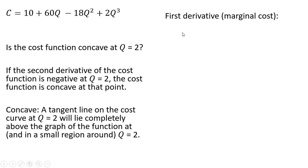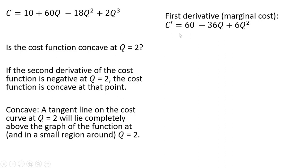So we need to get the second derivative. First, we get the first derivative, which happens to be marginal cost. Taking the derivative of this equation: the derivative of 10 drops out to 0; the derivative of 60q is 60; the derivative of minus 18q squared — bring the 2 down, so 2 times 18 gives us 36, and we subtract 1 from the exponent leaving just q. The derivative of the final term is 6q squared.